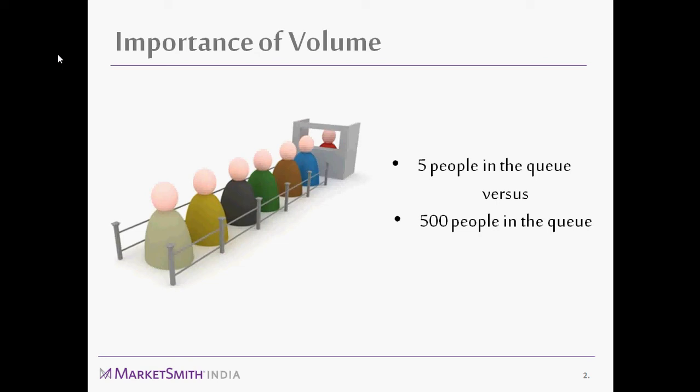Another example: before multiplex theaters, we had single-screen format theaters in tier-one and tier-two cities. If there's a popular movie on first day first show, due to huge demand for tickets, people who got in line early would buy multiple tickets and try to sell them to others at a highly jacked-up price — sometimes two times, sometimes three times. They do so because there is a market for the ticket at such a price. That's why prices adjust upwards when there is huge demand for a product, good, or service — in this case, a stock.